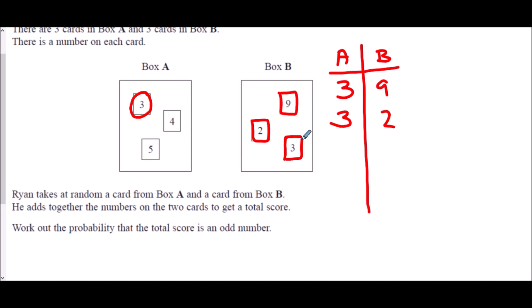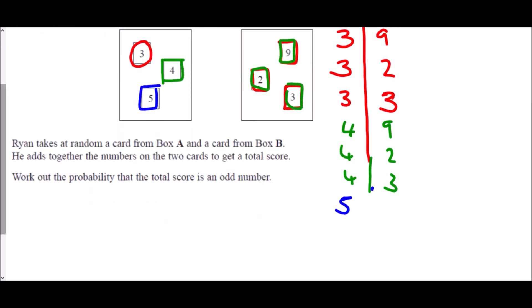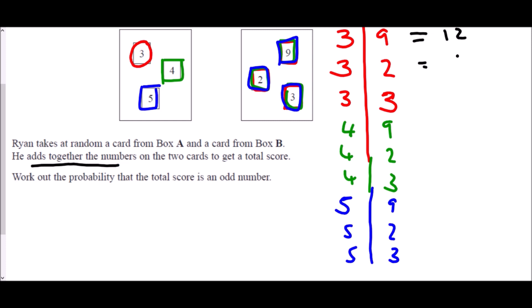If 4 is selected from Box A, it could be matched with 9, 2, or 3. If 5 is selected, it could be paired with 9, 2, or 3. Now we calculate all totals: 3+9=12, 3+2=5, 3+3=6, 4+9=13, 4+2=6, 4+3=7, 5+9=14, 5+2=7, 5+3=8.